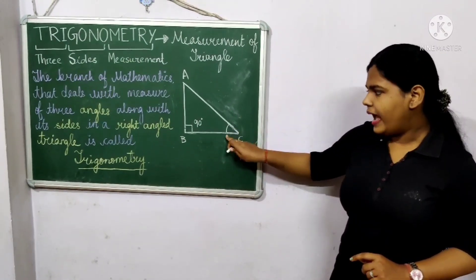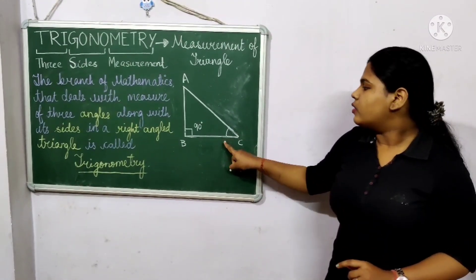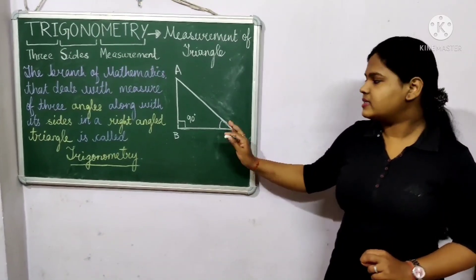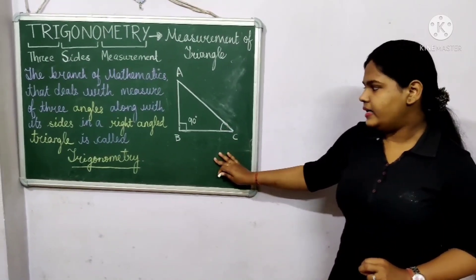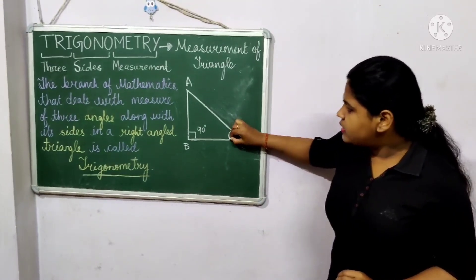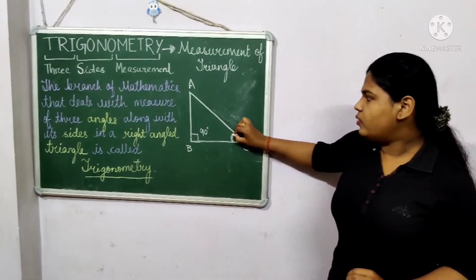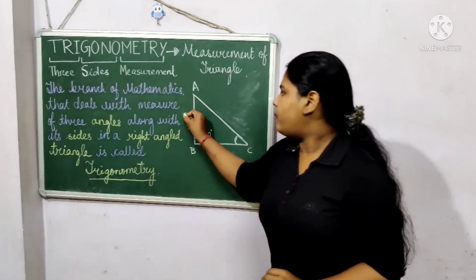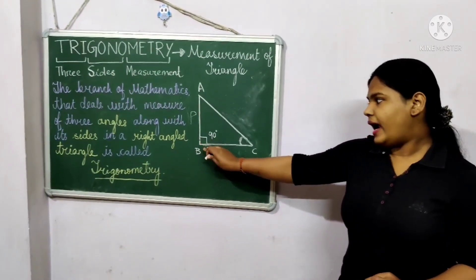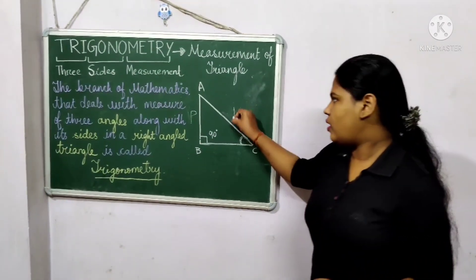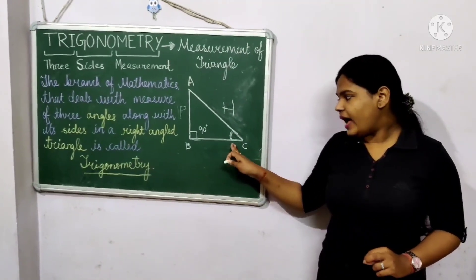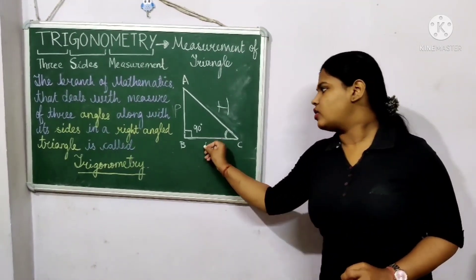Here it is an acute angle C. Acute angle means the angle having a value less than 90 degrees. The side opposite to the acute angle is called your perpendicular. The side opposite to your right angle is called hypotenuse. And the side adjacent to the acute angle is called base.